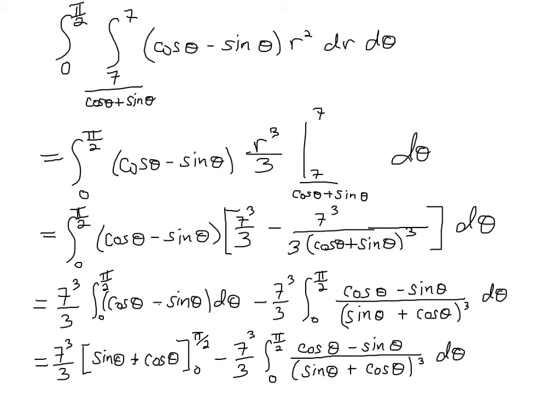Now we're ready to integrate. I combine the r terms, getting r² in the integrand. The limits of integration for r are 7/(cosθ + sinθ) to 7, and θ goes from 0 to π/2. Integrating with respect to r first, I get r³/3. Plugging in the limits gives 7³/3 minus 7³/3 divided by (cosθ + sinθ)³.